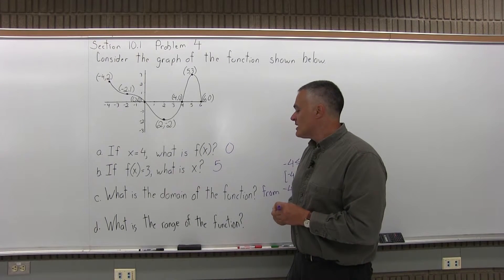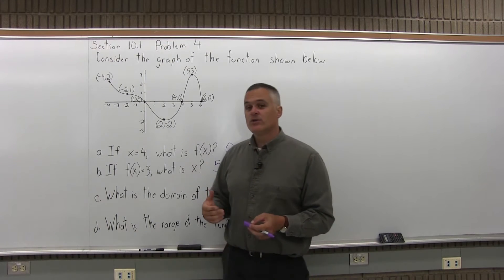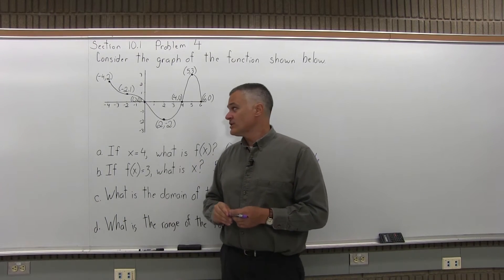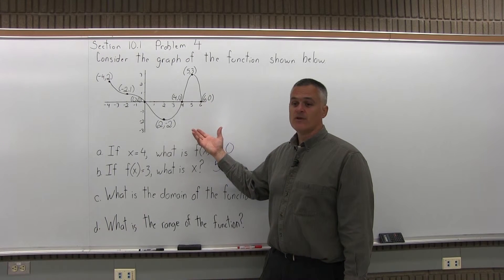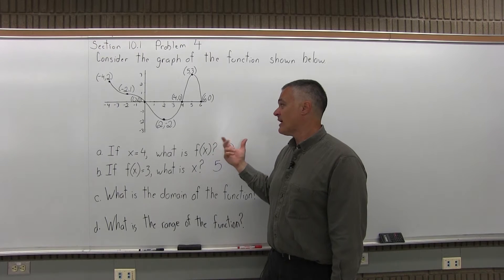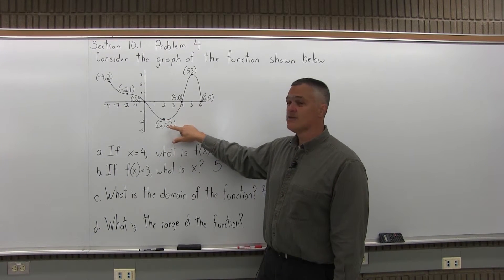Part D says, what is the range of the function? The range of a function is what you can get as an output value from the function. And in terms of the graph, it's what y values are covered by the graph. Now the y values covered by this graph. The graph has, the lowest point on the graph is labeled 2, comma, negative 2.